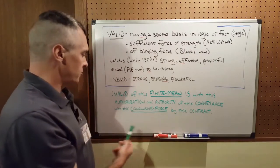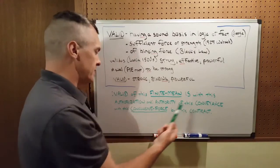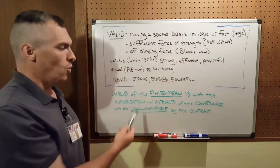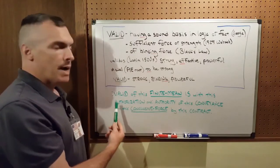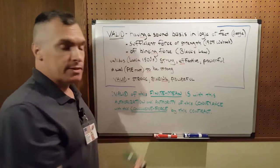Backwards, it says: for this contract of this conclusive force is, with this conveyance of this authorization and of this authority, with this finite mean, by the valid. And all finite mean is definition.